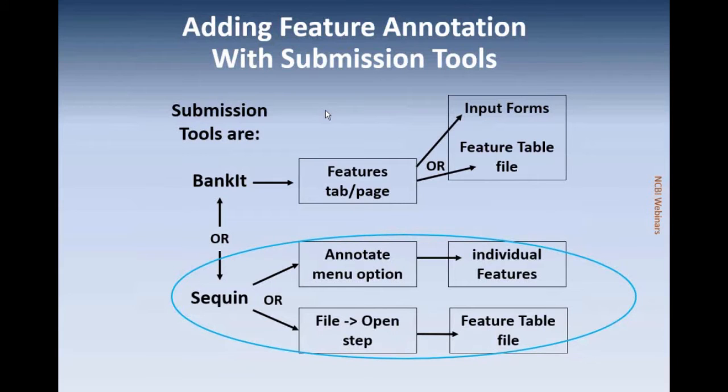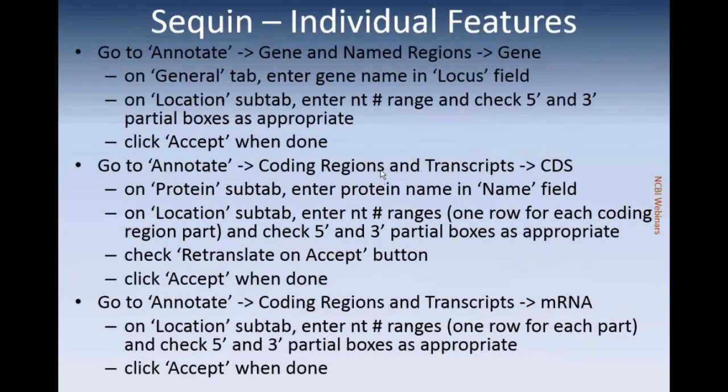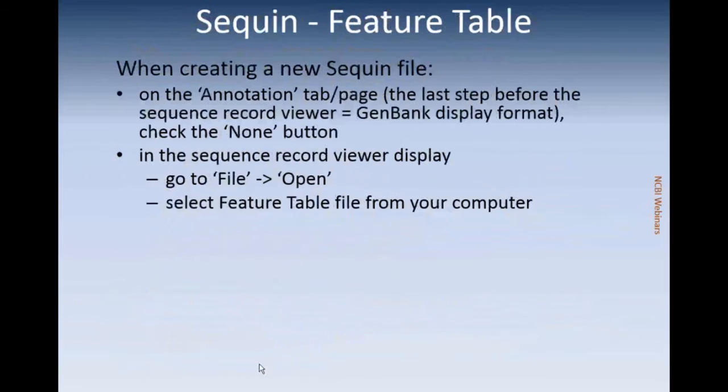You can also do the feature annotation with Sequin, and there are two different paths. These are the steps that you would do if you're going to do it by individual features, where you add each of the set of features, or you can use a feature table file.